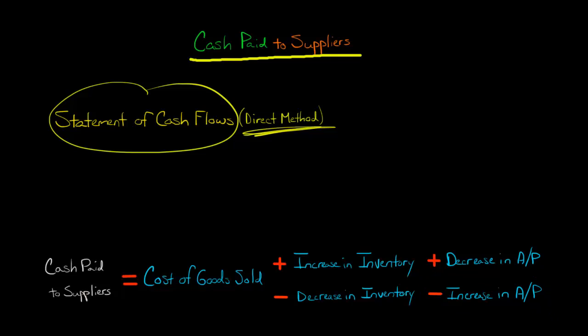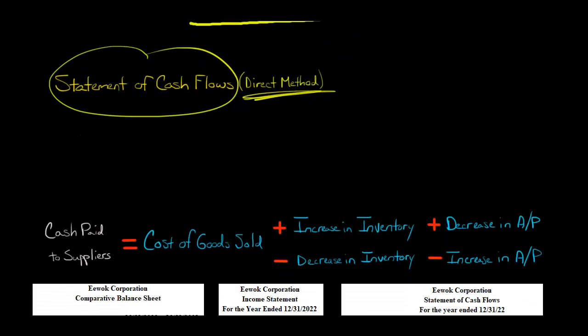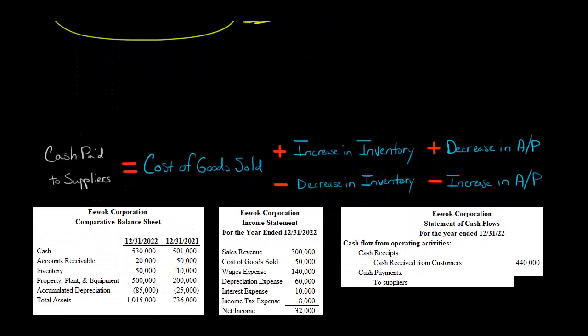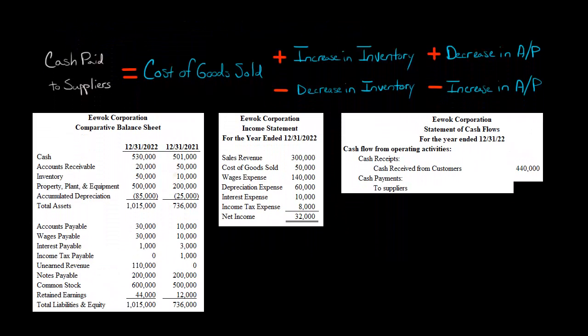I know this probably seems very complicated, so let me walk you through a sample problem, and I think you'll find that it's pretty easy. We're going to start with the cost of goods sold, and we're going to get that from the company's income statement. We've got the income statement right here, and the cost of goods sold is $50,000. So I'm just going to write that number right here — $50,000 for our cost of goods sold.